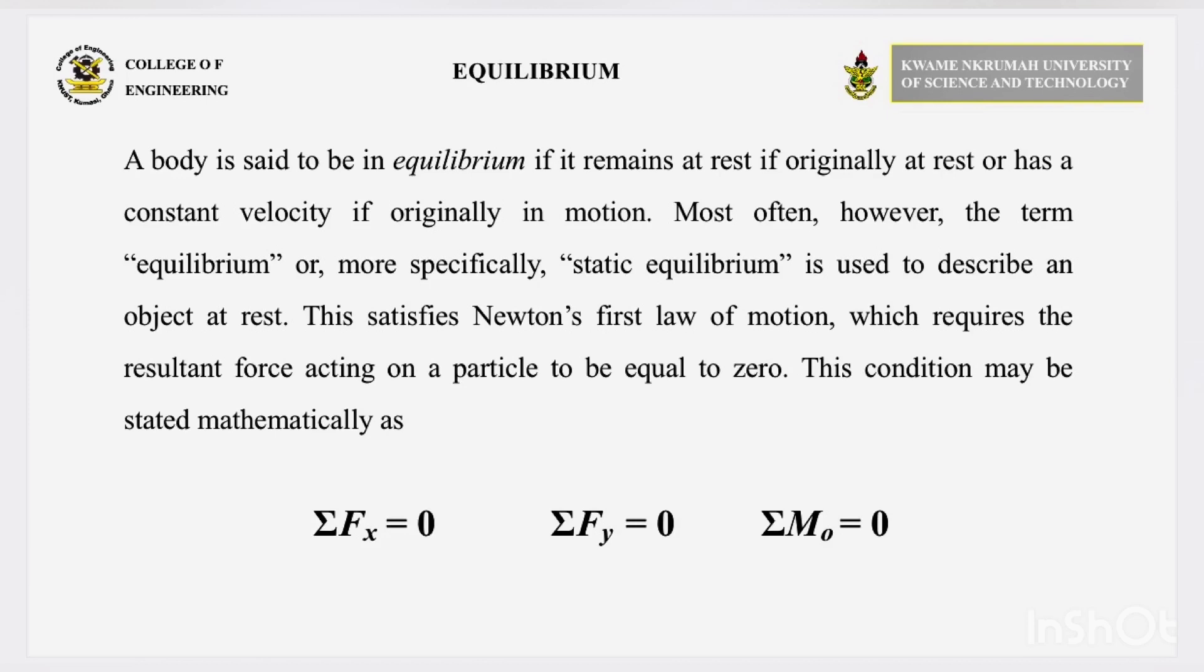All this satisfies Newton's first law, which requires the resultant force acting on a particle to be equal to zero. We can represent this condition mathematically as total forces on the x axis are zero, total forces on the y axis are zero, and total moment is equal to zero. These requirements are both necessary and sufficient conditions for equilibrium.